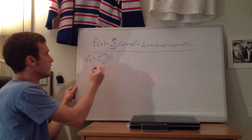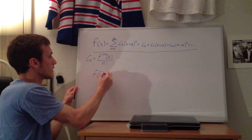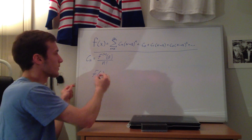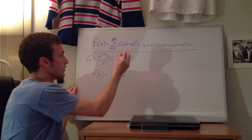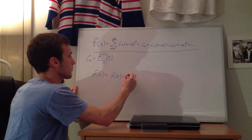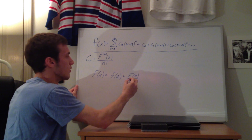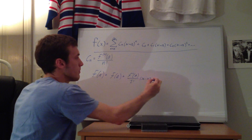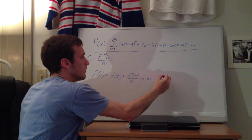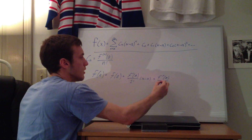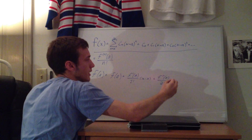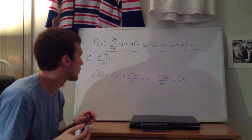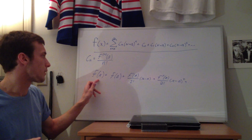Plugging those coefficients back into the power series gives us the Taylor series. The Taylor series approximation is f of x equals f of a plus f prime of a over 1 factorial times x minus a, plus f double prime of a over 2 factorial times x minus a squared, plus higher order terms. This is the Taylor series of a function about point a.